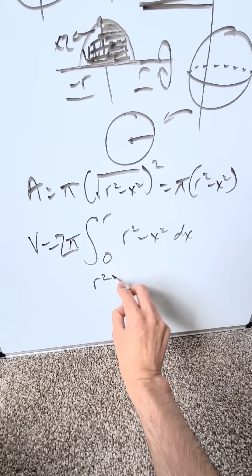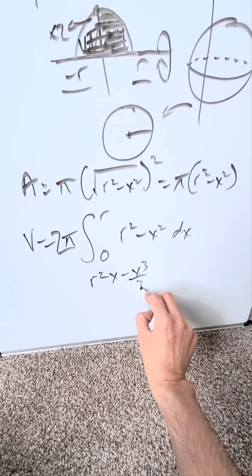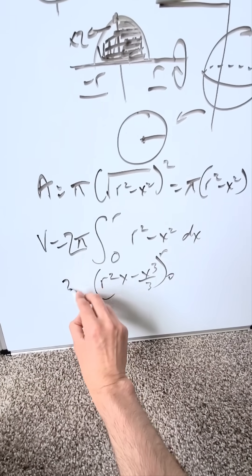Integrate this. It's easy. r squared x minus x cubed over three, upper limit r, lower limit zero, a two pi sitting outside.